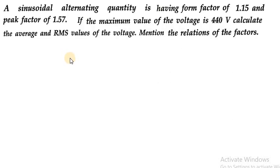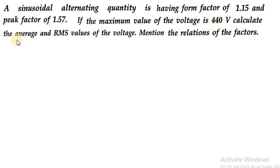Look at the statement of the numerical. A sinusoidal alternating quantity is having a form factor of 1.15 and peak factor of 1.50. If the maximum value of the voltage is 440 volt, calculate the average value, RMS value of the voltage, and mention the relations of the factors.